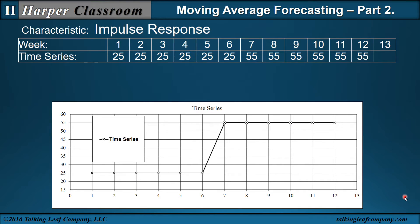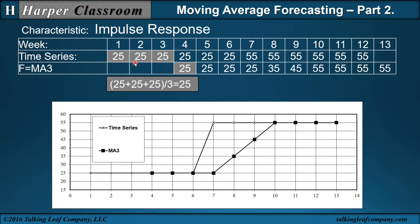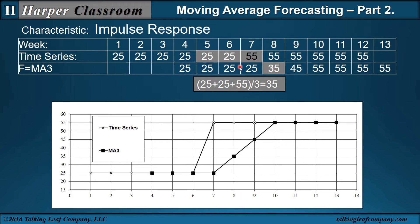First, impulse response. Here we have a weekly time series going along at 25, 25, 25 until time period 6 to 7, where it jumps to 55 and then stays at 55. With this jump — this step function, this increase — if it's important, it's called an impulse. So here we have an impulse in our time series, sometimes referred to as a signal. If we apply a three-point moving average: beginning 25, 25, 25, the average is just 25. But when we come to the impulse we have 25, 25, 55, and that average becomes 35. So for time period 8 we have 35.